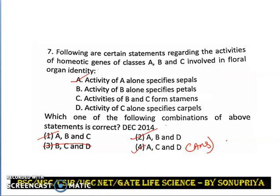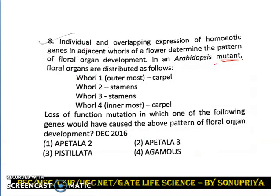Now let us discuss another question. Individual and overlapping expression of homeotic genes in adjacent whorls of a flower determine the pattern of floral organ development. In an Arabidopsis mutant, floral organs are distributed as follows: in the first whorl, carpel is present; in the second whorl, stamen is present; in the third whorl, stamen is present; and in the innermost whorl, carpel is present. Loss of function mutation in which of the following genes has caused this pattern?